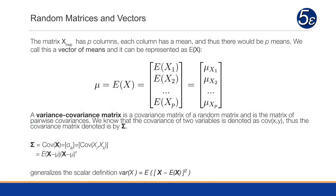The matrix X with N rows and P columns has P columns and N rows. Each column will have a mean, and thus there would be P means. We call this the vector of means, represented as E of X. Mu equals E of X equals each one of the particular expected values — the means of each variable — so it's mu of X1, mu of X2, and so forth.